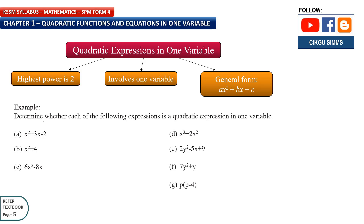Let's look at some examples to determine whether each expression is a quadratic expression in one variable. For (a): x squared plus 3x minus 2 — the highest power is 2 and there is only one variable, x. So this is a quadratic expression. Let's check the next one: highest power is 2, only one variable — also okay.